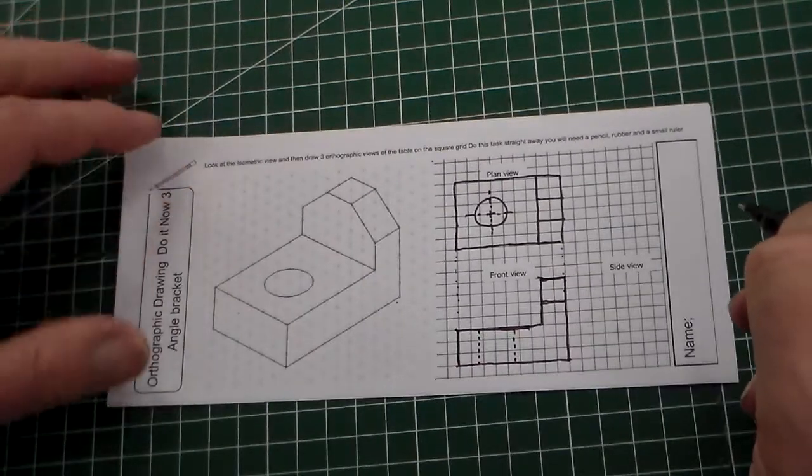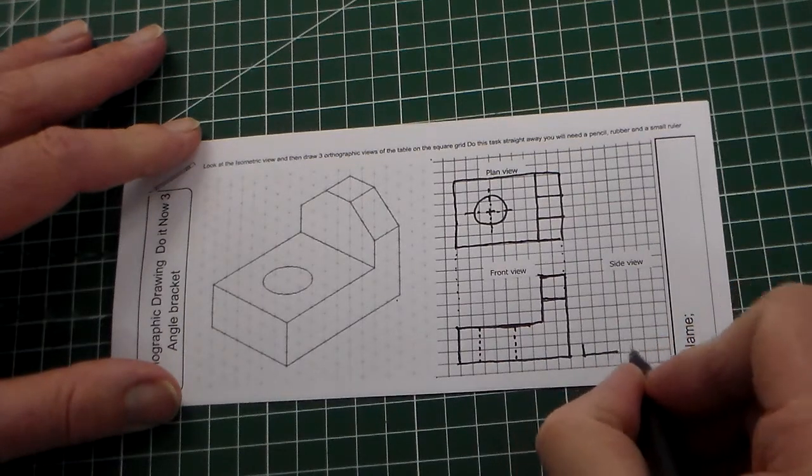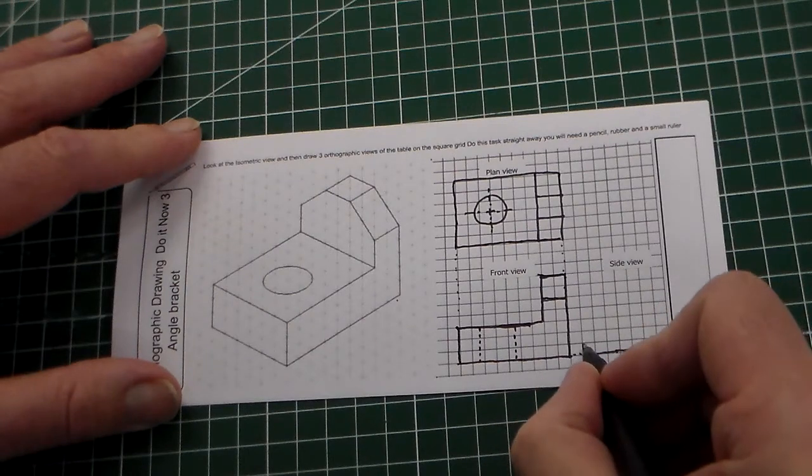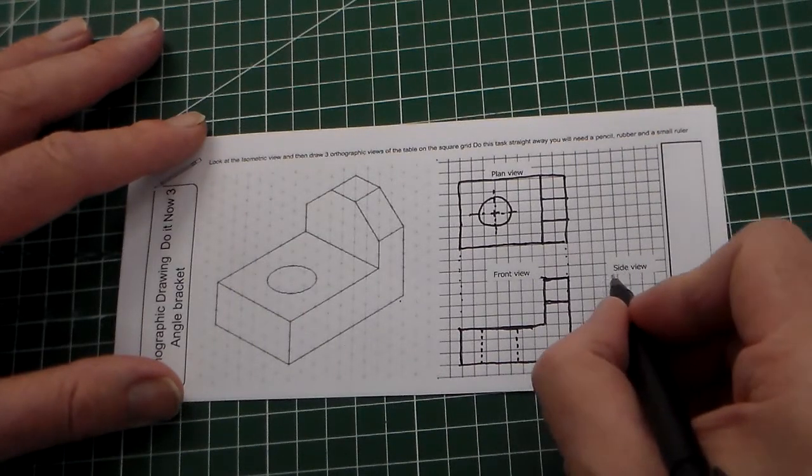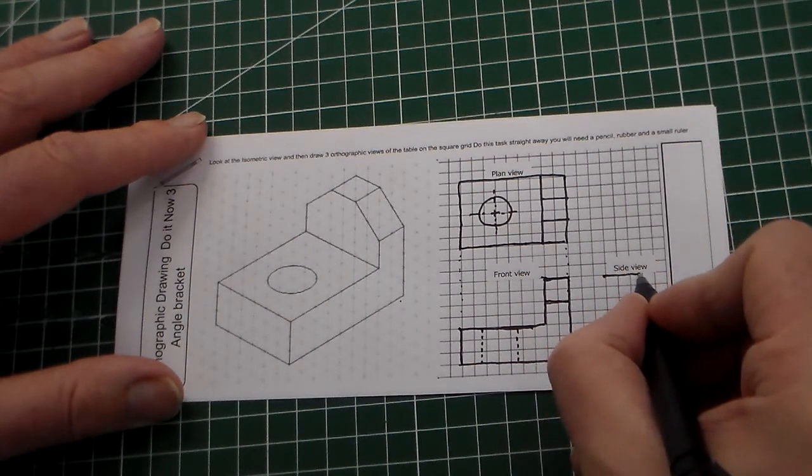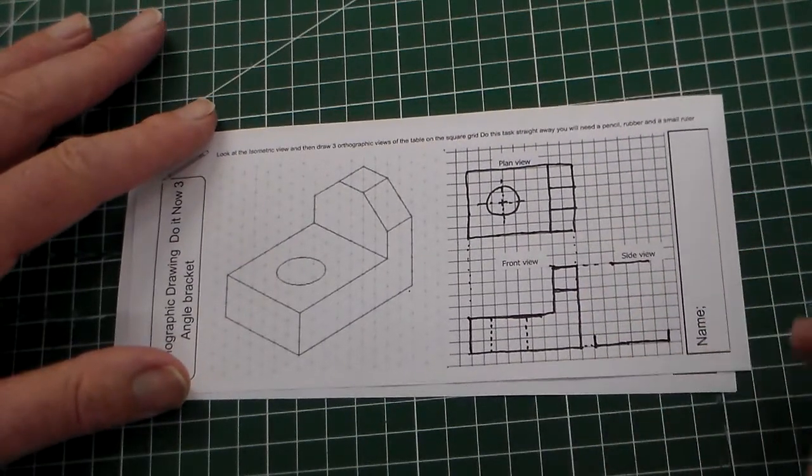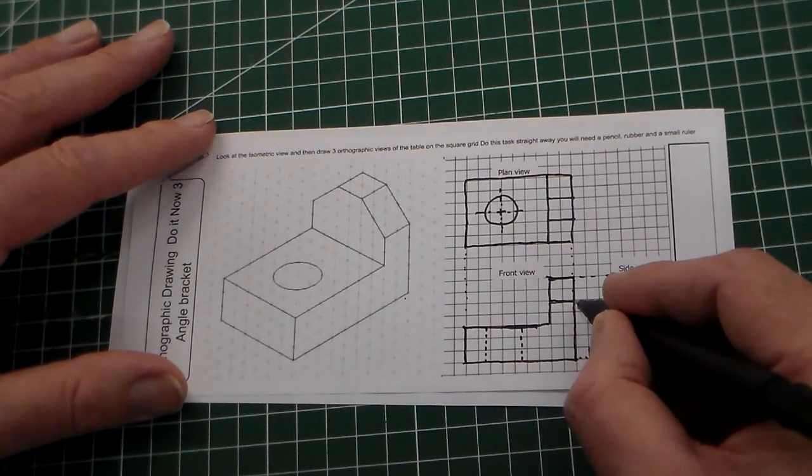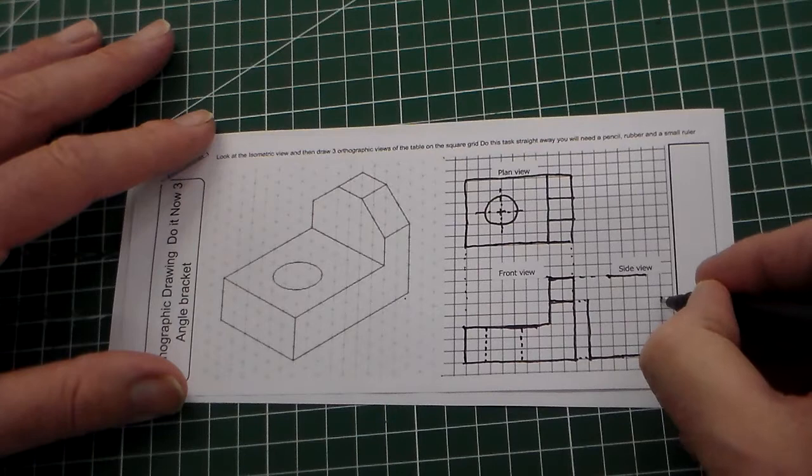Last of all, we need to add a side view. We've obviously got this line across here, you can draw this here, and then the top here. That top is projected along obviously from here and here. Then we've got this line here, and that needs to line up as well, so we can come here and we can come here.